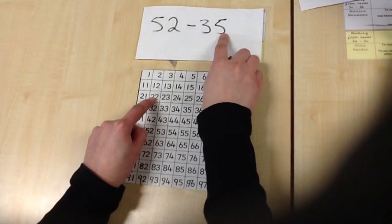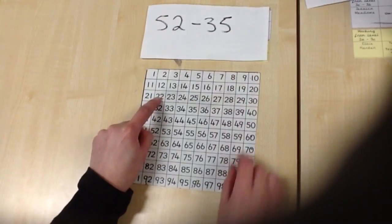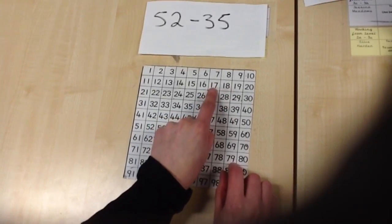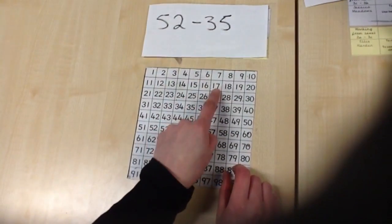Then I look at the units. There are 5 units. So I count back 5. 1, 2, 3, 4, 5. So the answer to 52 take away 35 is 17.